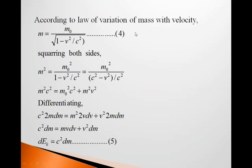According to law of variation of mass with velocity, m is equal to m0 upon square root of 1 minus v square by c square, equation 4. Squaring both sides of this equation, we get m square is equal to m0 square upon 1 minus v square by c square, which equals m0 square upon c square minus v square by c square. So we get m square c square is equal to m0 square c square plus m square v square.